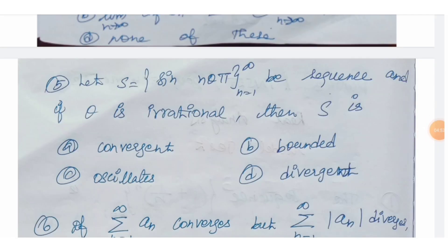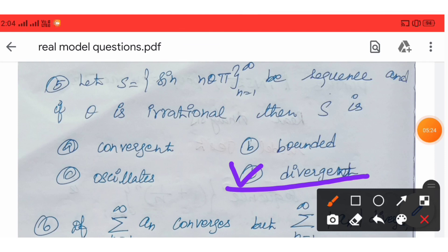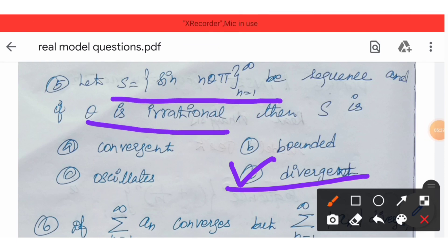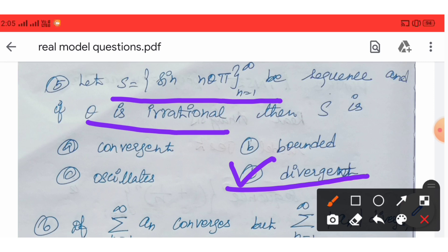Next: if S = {sin(nθπ)}, n = 1 to infinity is a sequence and θ is irrational, then S is divergent. Option D is the correct answer.